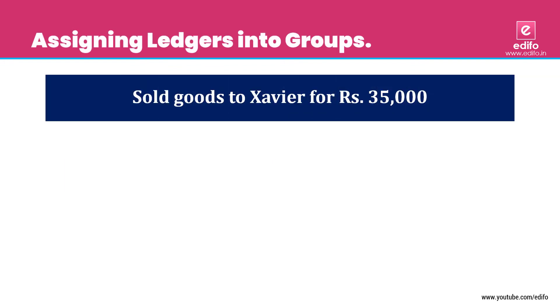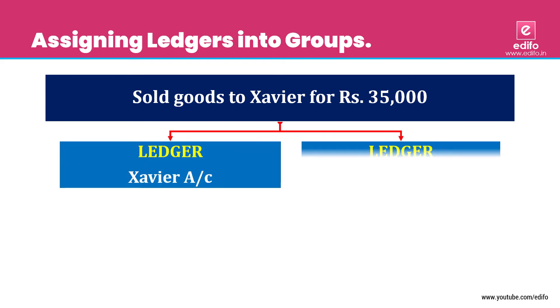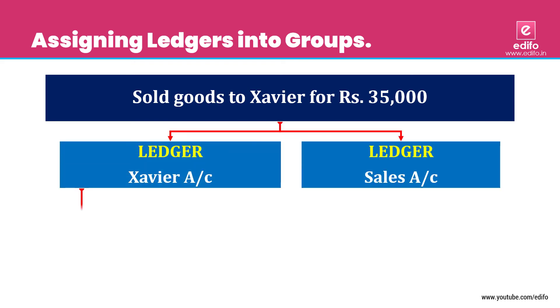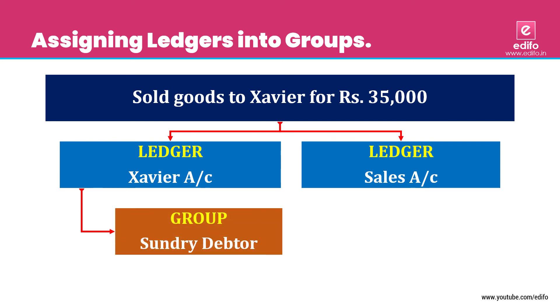Next transaction: sold goods to Saviour for Rs. 35,000. It is a credit sale, so instead of cash, we use a personal account — that is Saviour. Two aspects: Saviour account and sales account. Saviour account belongs to 'Sundry Debtors' because he owes money to us, and sales belongs to the 'Sales' group.